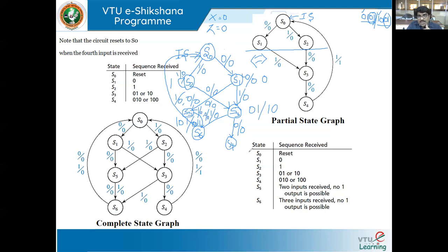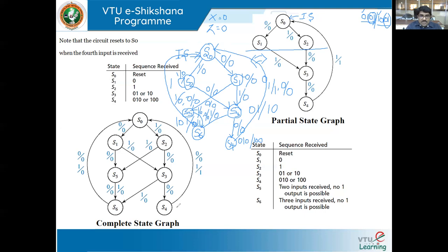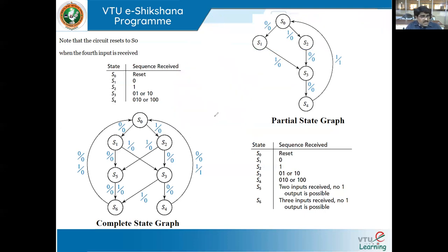At S4 we have encountered either the 010 or 100 sequence. If X equals 1, the pattern is achieved — move to the initial state S0 with output Z equal to 1. If X equals 0, the pattern is not recognized — output is 0 but again go to the initial state S0. This is the complete state graph for the second example, detecting 0101 or 1001, with reset after every four bits.